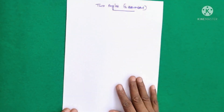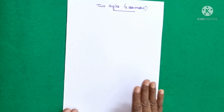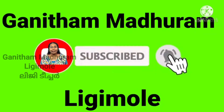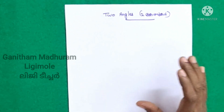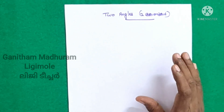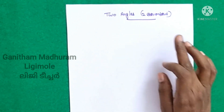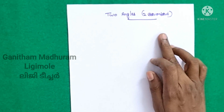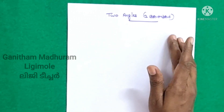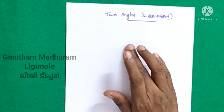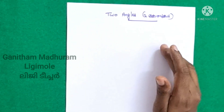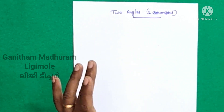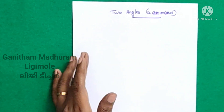Hello friends. Welcome to Gennda Madhuran channel. In this video, we are going to draw triangles using two angles. I will tell you how to use the angles. We can draw a triangle if one side and two angles are specified.